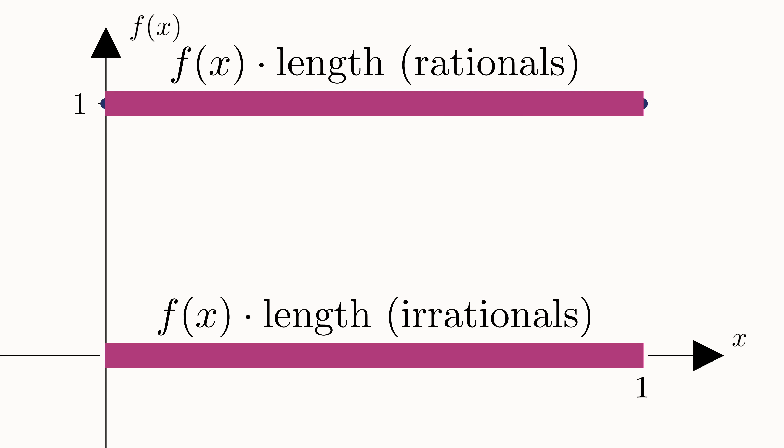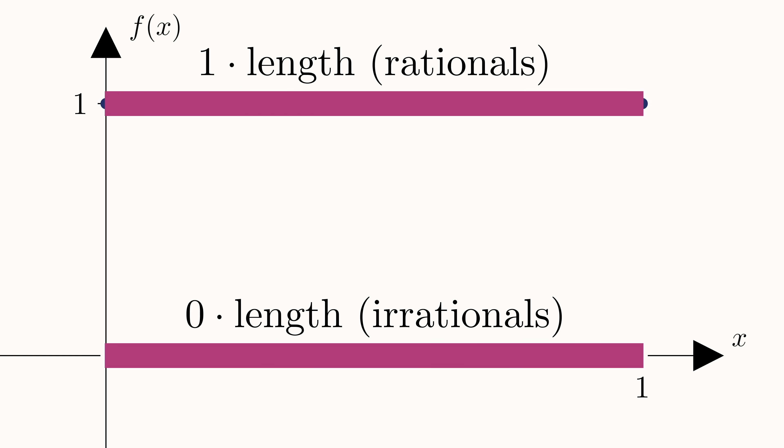For the irrational points, we have f(x) equals zero. So their contribution is zero times the length of the irrationals, which just evaluates to zero. For the rational contribution, we multiply one by the length of the rationals. But how in the world do we calculate the length of the rationals? They are an infinite number of points scattered throughout the interval.